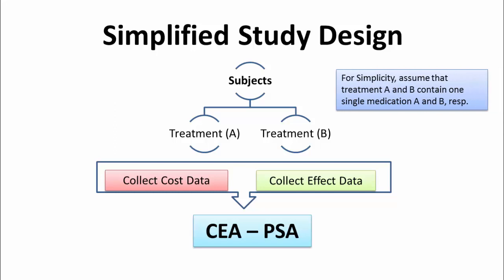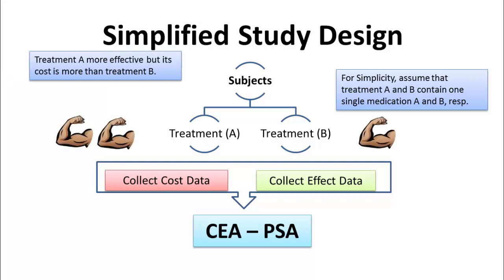For simplicity, we'll assume that treatment A and B contain one single medication A and B respectively. Treatment A will be more effective but also more expensive than treatment B, and hence treatment B will be our base case.